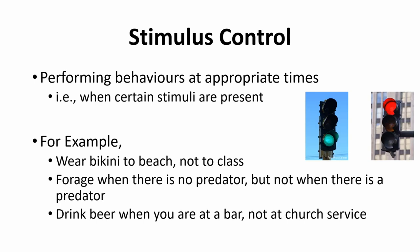For more naturalistic examples, we could talk about foraging when there's no predator present, but not foraging when a predator is present. That calm environment with no predator would be a discriminative stimulus saying it's okay to forage right now. A lot of what we'll discuss will focus on things like pecking a key or pulling a lever, because those are easier to frame in terms of the concepts we're covering today.